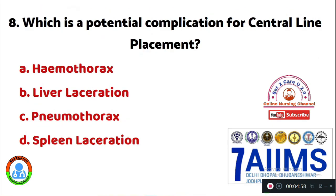Question 8: Which is a potential complication for central line placement? Option A: hemothorax. Option B: liver laceration. Option C: pneumothorax. Option D: spleen laceration. The potential complication for central line placement — the right answer is Option C, pneumothorax.